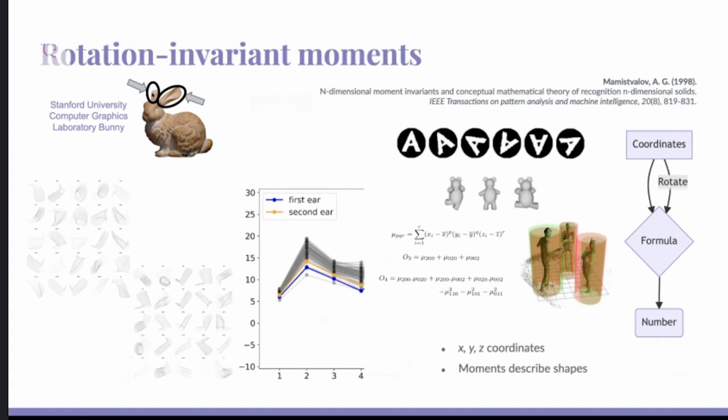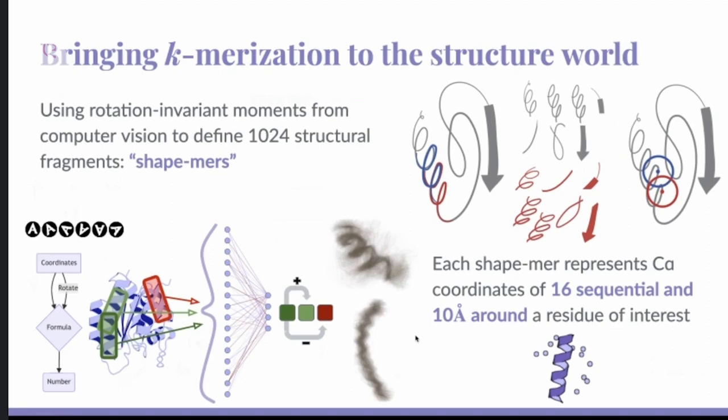So here I have an example of these two ears from the bunny, which you would expect to be similar, rotated and translated in different ways. And then those same four moments for those two ears in blue and orange, and then for random parts of the rest of the bunny of the same size. And you can see that the ears are kind of closer to each other, meaning that not only do these moment invariant formulas give you the same number when you rotate the coordinates, but you can use them to somehow describe different shapes.